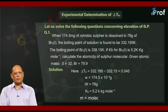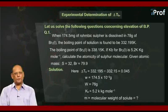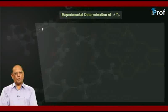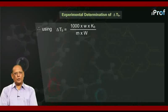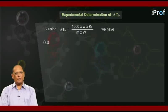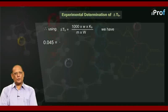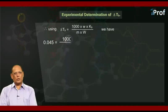The molecular weight of the solute, small m, is to be calculated. Therefore, using the formula delta Tb equal to 1000 into w into Kb over M into capital W, we have 0.045 equal to 1000 into 174.5 into 10 to the power minus 3 into 5.2 over M into 78.